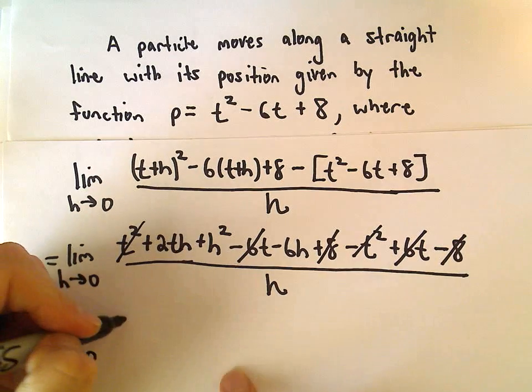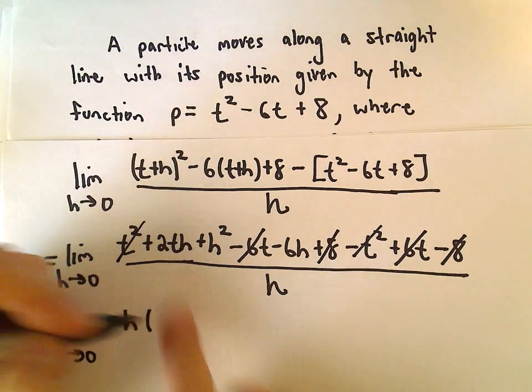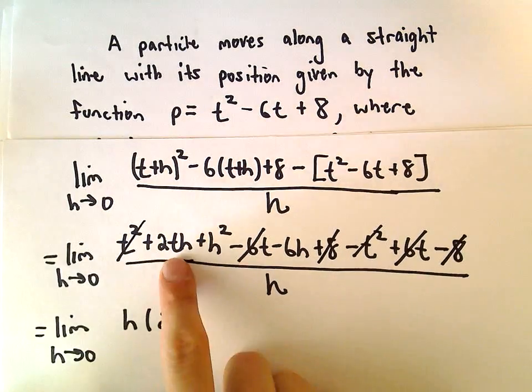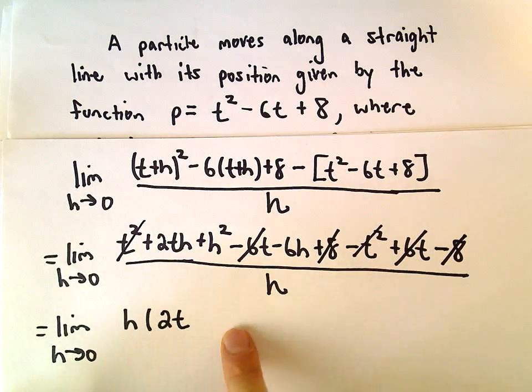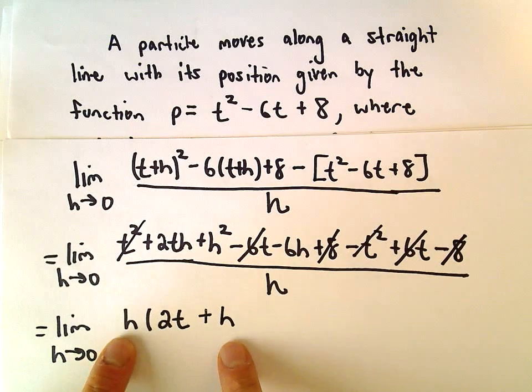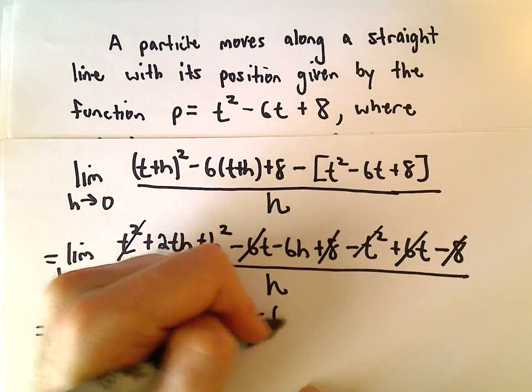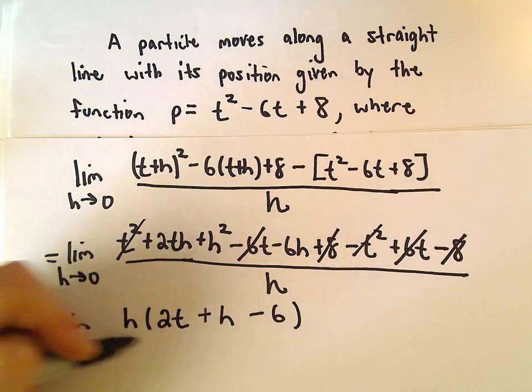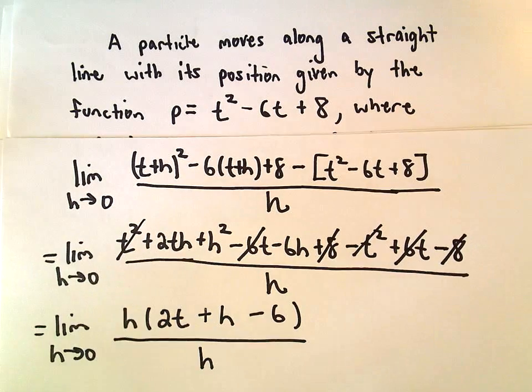Well, I'm going to factor an h out of the numerator, so h times 2t would give me 2t h, h times positive h would give me my h squared, and then we would need h times negative 6 to get our negative 6h, and again, we're still just dividing by h.